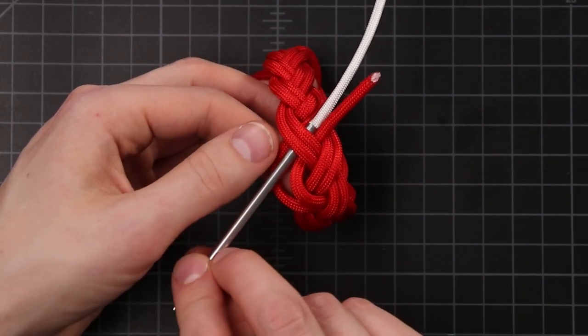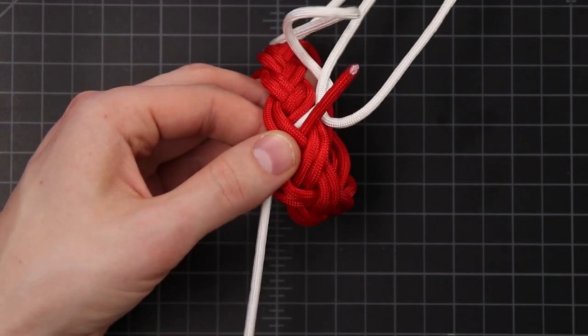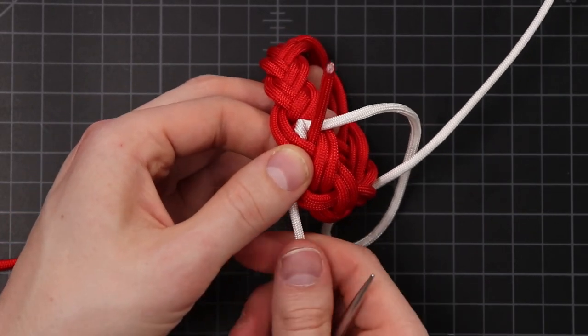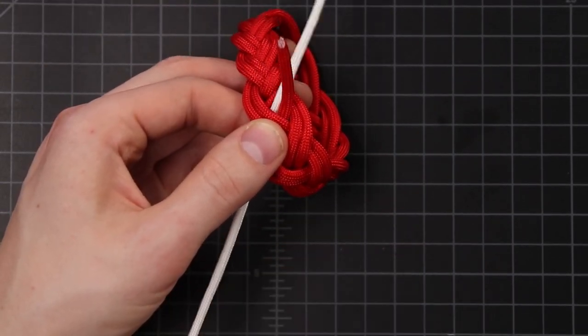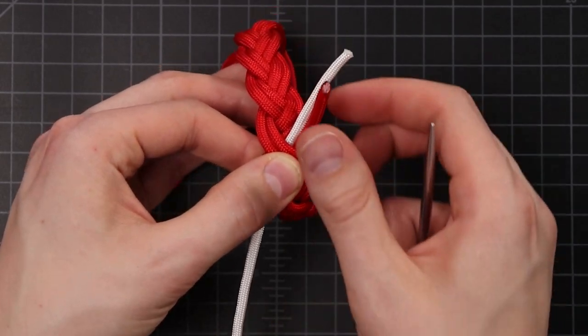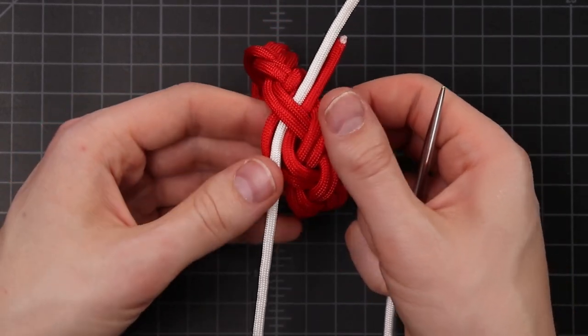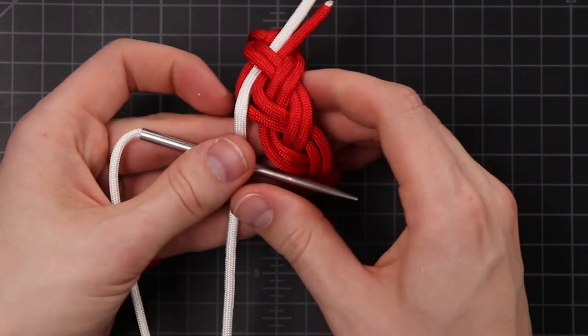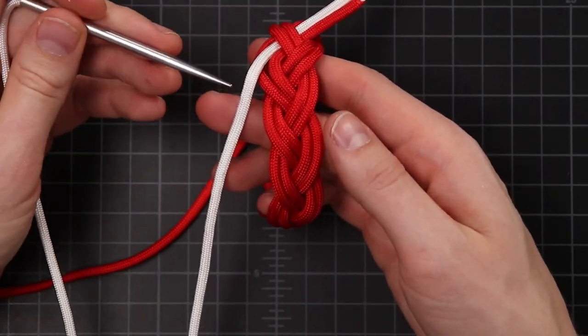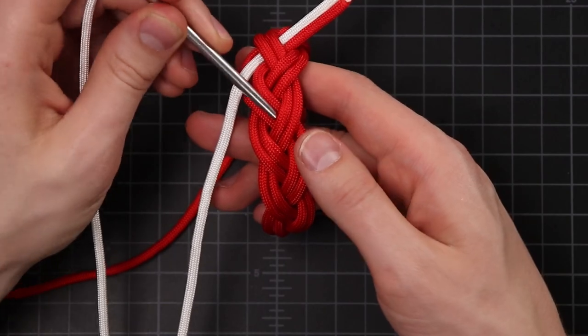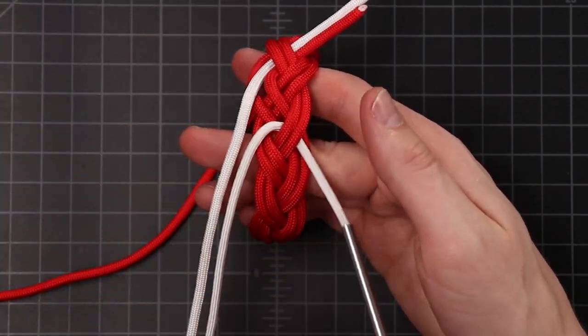We're starting right where that other cord ended, or where we first began actually. Pull it all the way through. Again, this one you can leave attached to your hank or spool. I'm just going to leave a little bit of extra there so it doesn't fall out. Then we'll follow it through just like we did with the second row, except we're going in between. You just want to make sure it sits there each pass you make.